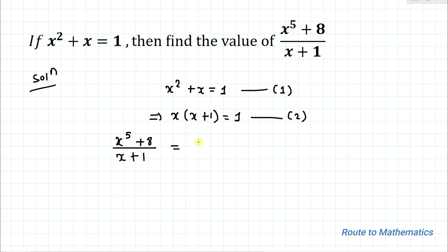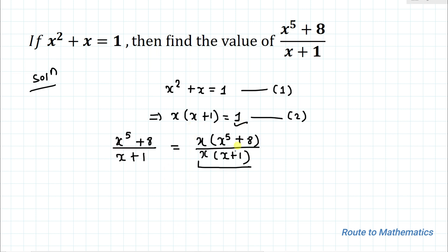In the next step, let's multiply both the numerator and denominator by x. So we have x·(x⁵ + 8) divided by x·(x + 1). You can notice that in the denominator we have x·(x + 1), which equals 1 from equation 2. Substituting that value gives us x·(x⁵ + 8) = x⁶ + 8x.